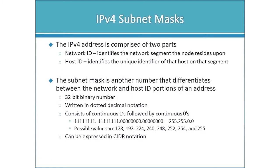When the ones in the subnet mask stop, that marks the end of the network portion. Subnet masks can be written in dotted decimal notation, as is typical in Windows, or in CIDR notation — Classless Interdomain Routing. CIDR specifies the number of bits in the subnet mask set to one. So an address like 192.168.1.100/24 means 24 out of 32 bits in the mask are set to one — a simpler way to express the mask.